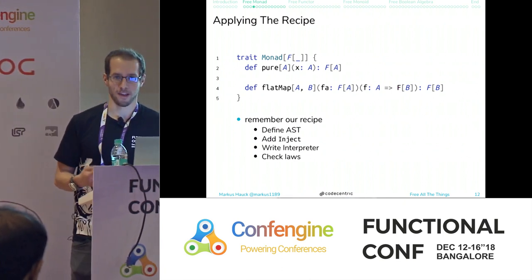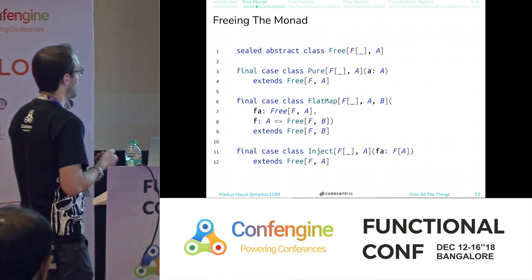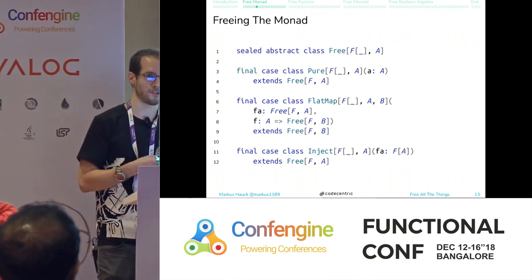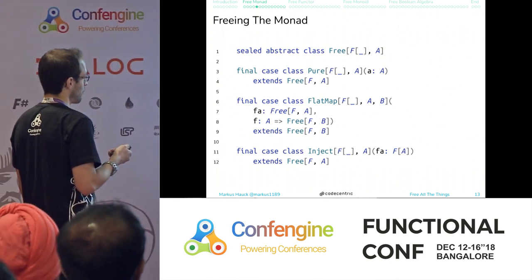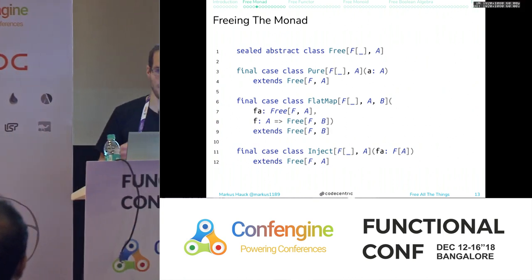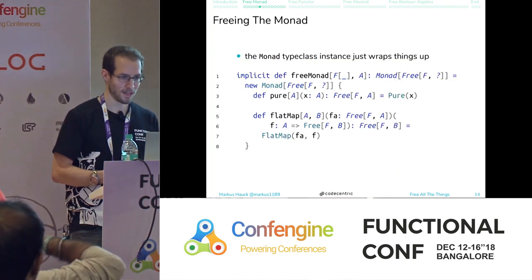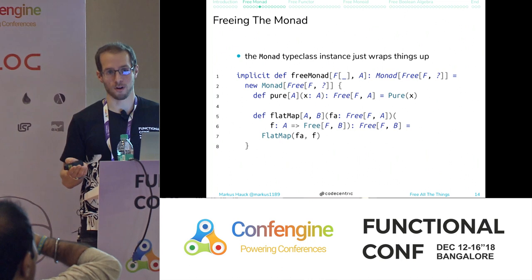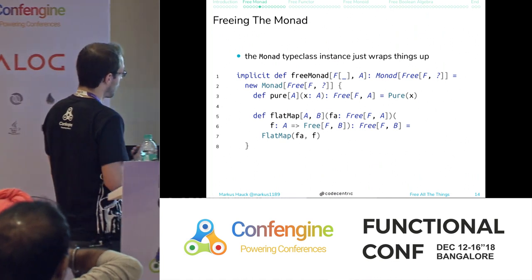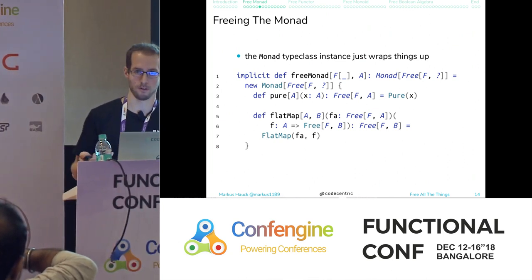Following the recipe, we create a sealed abstract class called Free with nodes: a Pure case capturing the pure operation, a FlatMap case capturing the arguments — an FA of type Free of FA and a function from A to Free of FB — and one additional Inject case. We then write a monad instance: calling pure captures into the Pure node, and calling flatMap captures into the FlatMap node. We're just building up an AST when using the free monad.